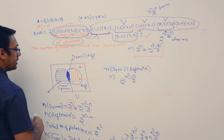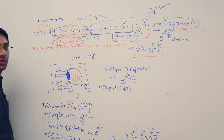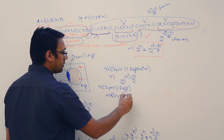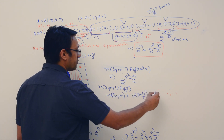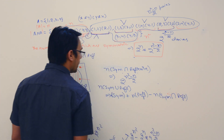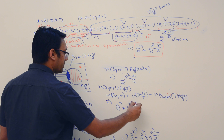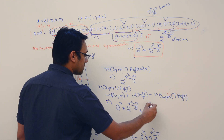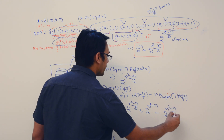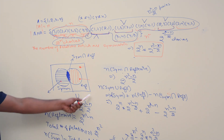The number of relations which are symmetric or reflexive can be found using inclusion-exclusion: number of symmetric relations + number of reflexive relations − number of relations which are both symmetric and reflexive. That is: 2^n × 2^((n² − n)/2) + 2^(n² − n) − 2^((n² − n)/2).